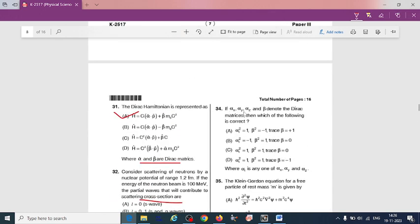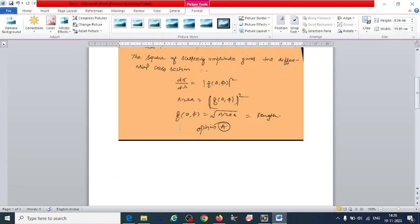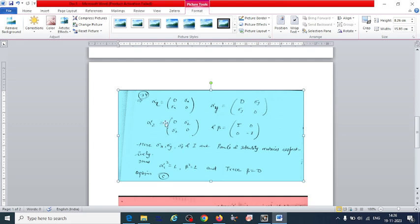Next question: If αₓ, αᵧ, αᵤ, and β denote the Dirac matrices, then which of the following is correct? So the answer for this: first what we have to do is write down the αₓ, αᵧ, αᵤ matrices. Here alpha and beta in terms of matrices, and σₓ, σᵧ, σᵤ and I are Pauli identity matrices respectively.